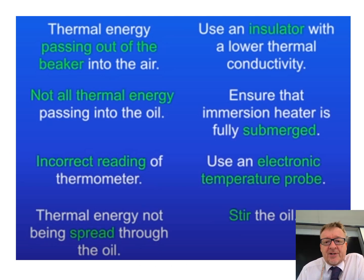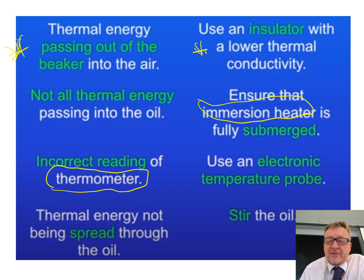Now, issues with it. What you can do is you can find that there's a number of issues with the practical itself. Thermal energy passing out of the beaker into the air. So, if you're doing it as a liquid, you'll find that heat comes out of the beaker or comes out of the metal block. What you can do with that is just use an insulator. Another problem is, not all the thermal energy is passing into the oil. You've got to make sure that the immersion heater is submerged or directly into the actual block itself. If you've then got a manual device like a thermometer, best way of improving it is use an electronic thermometer, an electronic temperature probe. Then, this is more based on the liquid one. If you've got thermal energy within there, you've got to make sure you're stirring it to make sure that the heat is getting transferred throughout.